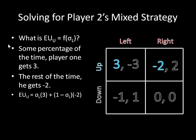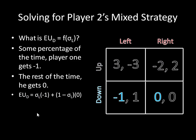Let's find player one's expected utility for up. If player one is playing up, some percentage of the time player two is going to play left and player one earns three, and the rest of the time player two plays right and player one gets negative two. So expected utility for up equals sigma_l times three, plus one minus sigma_l times negative two. For expected utility for down: some percentage of the time player one gets negative one and the rest of the time he gets zero. So expected utility for down equals sigma_l times negative one, plus one minus sigma_l times zero.